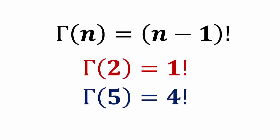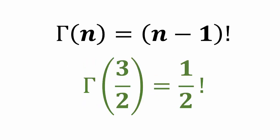So if you plug in 2, you are going to get 1 factorial. If you plug in 5, you are going to get 4 factorial. So if you plug in 3 halves to gamma function, you get 1 half factorial.